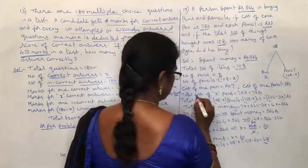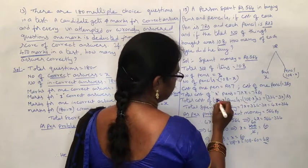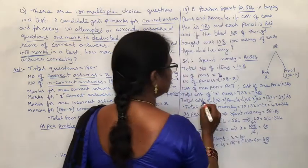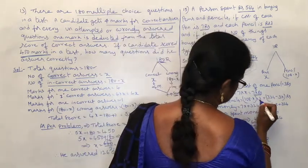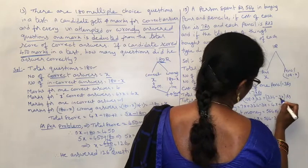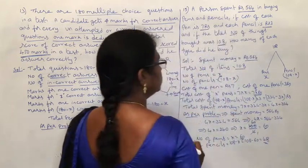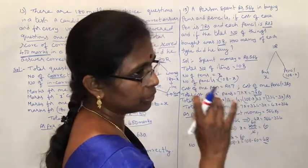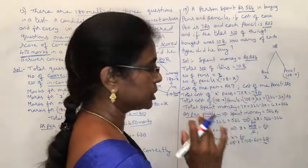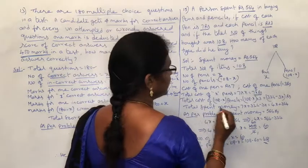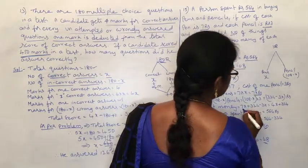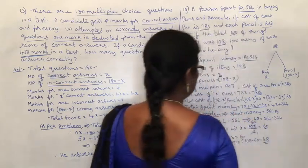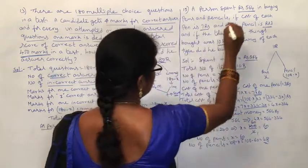Total cost of x pens equals 7x rupees. Total cost of pencils: (108 minus x) into 3, which equals 324 minus 3x. Total spent money equals cost of pens plus cost of pencils, giving 7x plus 324 minus 3x, which simplifies to 4x plus 324.